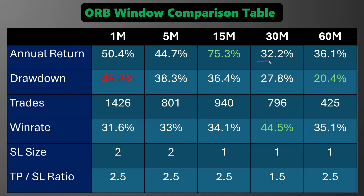As expected, the annual return on the 30- and 60-minute ORBs is smaller than the other three. But the drawdown is far better, with the 60-minute giving me the best drawdown of all the tests. The number of trades continued to decrease and really dropped off on the 60-minute ORB. The win rate trend continued as well — with the exception of the 30-minute where 1.5x take profit was best (which naturally pushed the win rate higher), all the others used a 2.5x take profit target, but with each increasing ORB window, the win rate continued to go up.